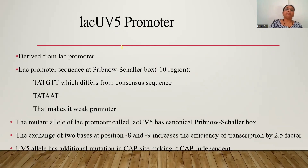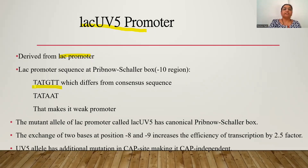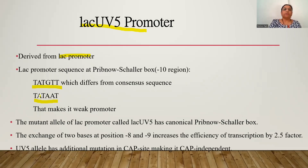Now we know about the lac promoter. From the lac promoter, the lac UV5 promoter has been derived. When the lac promoter was studied, it was found that at the minus 10 region the lac promoter has the sequence T-A-T-G-T-T, whereas the consensus sequence is T-A-T-A-A-T. Because of this deviation from the consensus, the lac promoter is a weak promoter.